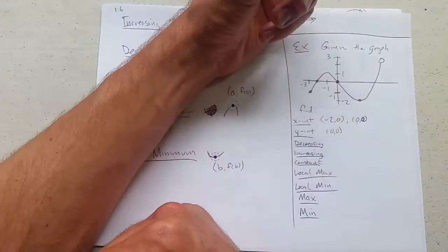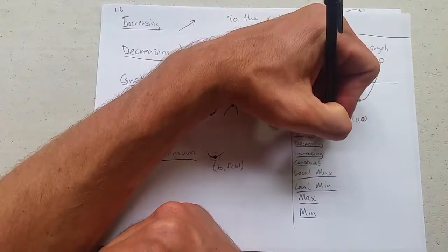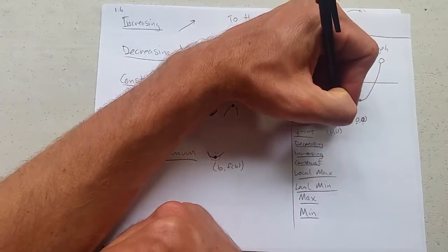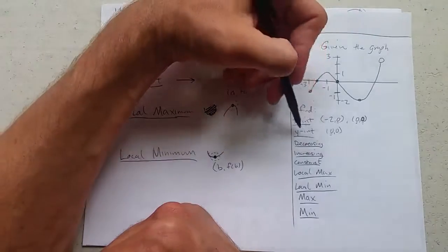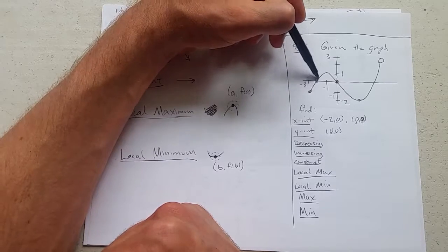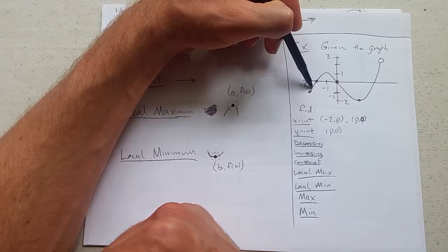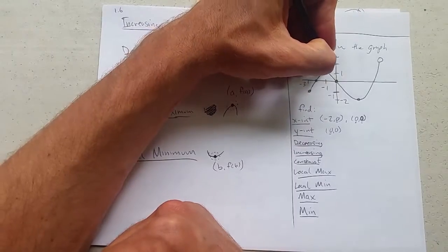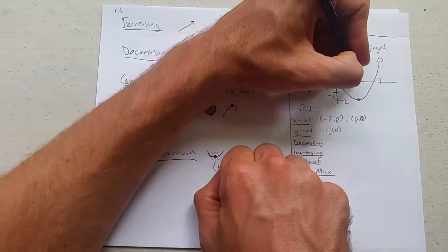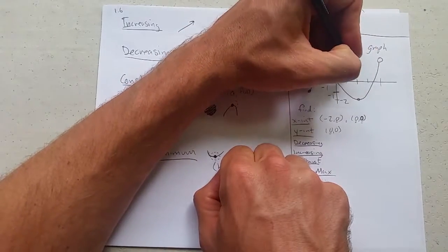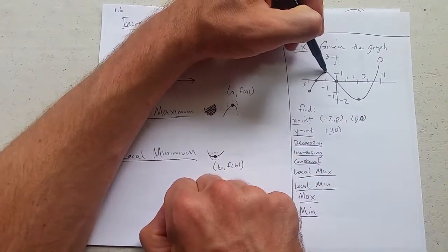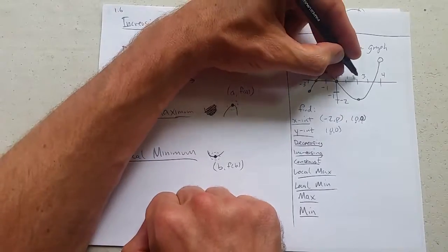Remember, x-intercepts, they have a y-coordinate of 0. So y-intercepts have an x-coordinate of 0. So these have y-coordinates of 0. And the y-intercept has an x-coordinate of 0. Where is this decreasing? You want to be careful. It looks like it may be decreasing here, but you want to make sure you go to the right. When you go to the right, you can see decreasing happens from negative 1. Oh, I need to label some points here. Let's go 1, 2, 3, 4. So we're going to go from 1 to 2, negative 1 to 2.